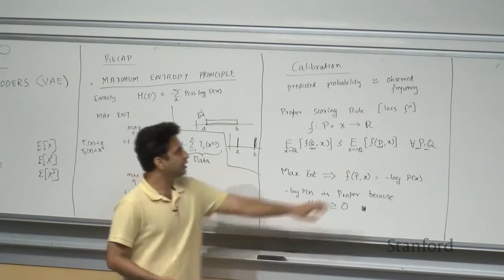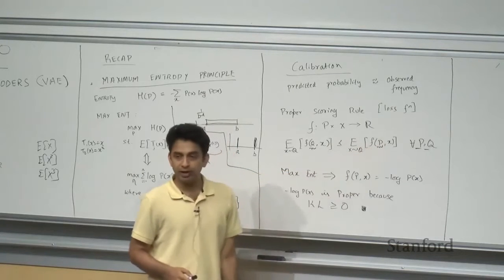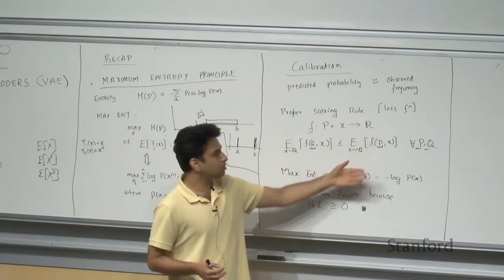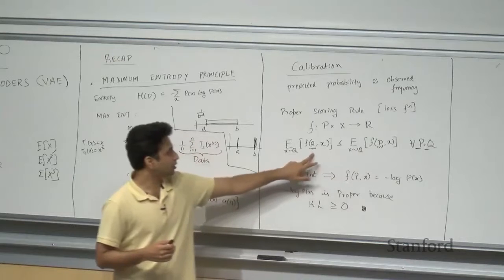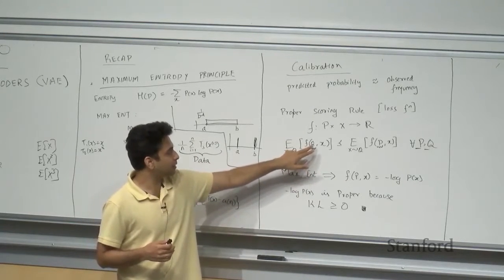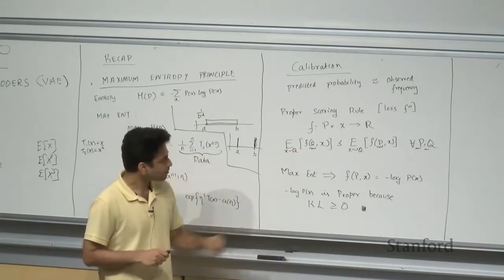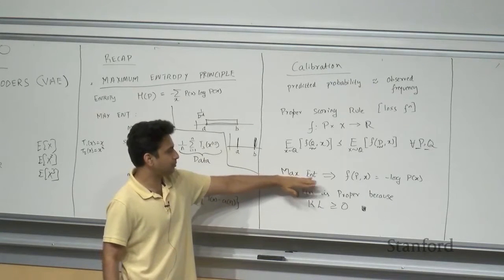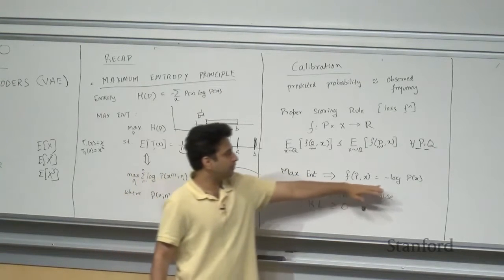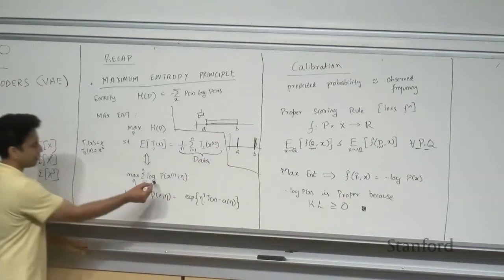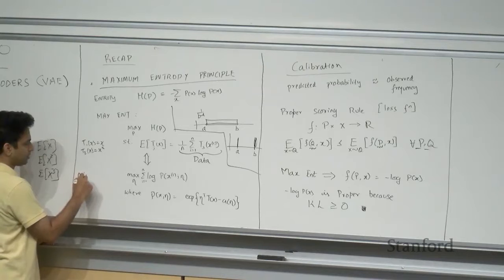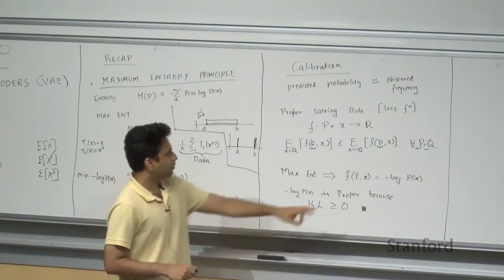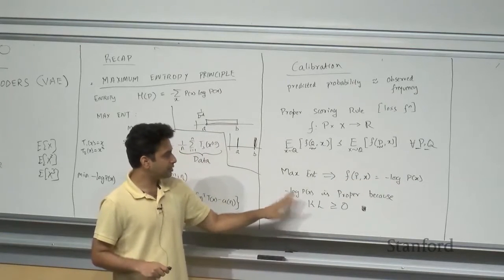If our loss function penalizes prediction P using a proper scoring rule, then proper scoring rules encourage our model to predict the true probabilities, because the minimum is achieved when the predicted probability equals the real-world occurrence. We saw the connection to maximum entropy: if we maximize entropy, the loss function we get is the negative log P(x). We can minimize negative log P(x) — negative log likelihood is just the loss function of the maximum likelihood objective.